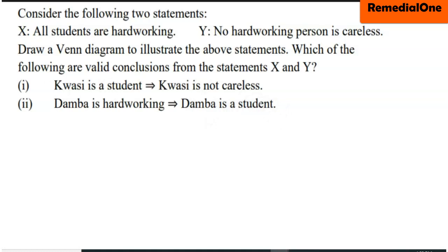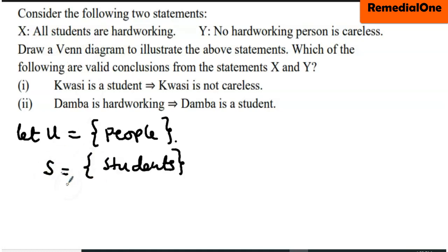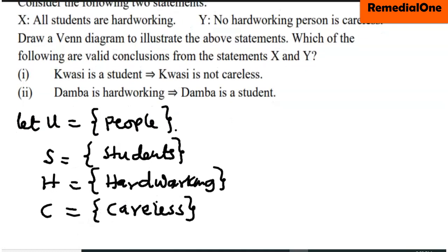Now to begin with, we need to break this statement into further simple statements. We can let U be people. So within statement X, we can break into S be a set of students, and then H be hardworking. Now let's come here. Hardworking is there. Careless. C is careless. So we go back to the statement.